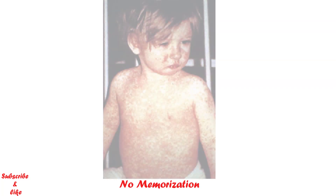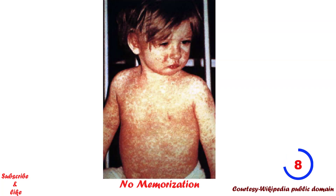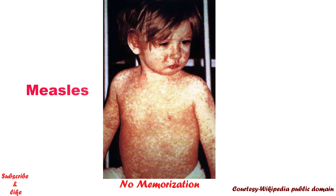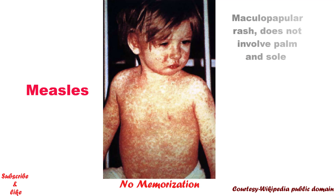Let's start with the picture. Can you recognize that? This is the typical picture of measles — an erythematous maculopapular confluent rash that starts at the hairline and spreads downwards, with sparing of the palms and soles. This is very important: maculopapular rash but does not involve the palms or soles.